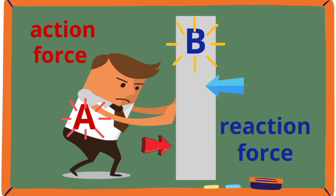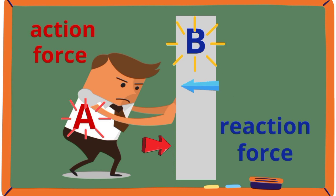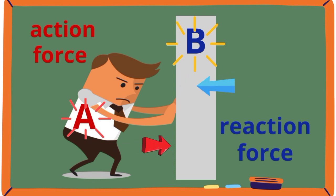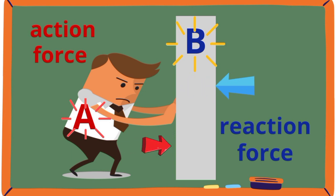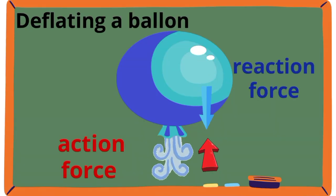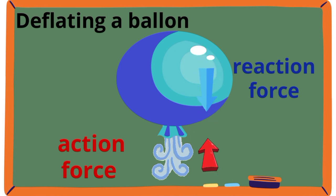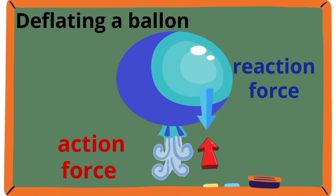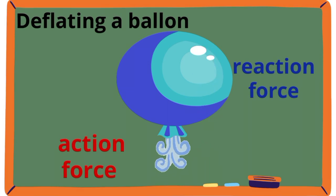According to this law, action is accompanied by a reaction force and the two forces must be equal and opposite. For example, a boy pushes the wall. The Law of Interaction states that if body A, which is the boy, exerts a force on body B, which is the wall, then body B, the wall, will exert a force of equal magnitude on body A, the boy, but in the opposite direction. Another example: a deflating balloon. When the balloon goes up — that is the reaction — air rushes down — that is the action. Action-reaction forces do not cancel each other since they act on two different objects or systems.